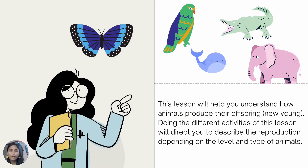Animals cannot live forever. Like humans, animals also need to reproduce. They have their reproductive system that enables them to carry out this life process. Most of them perform sexual reproduction involving male and female animals. In this way, extinction is prevented and diversity in nature is maintained. Producing new animals may mean food supply to other organisms, and it signals the continuous existence of certain species.